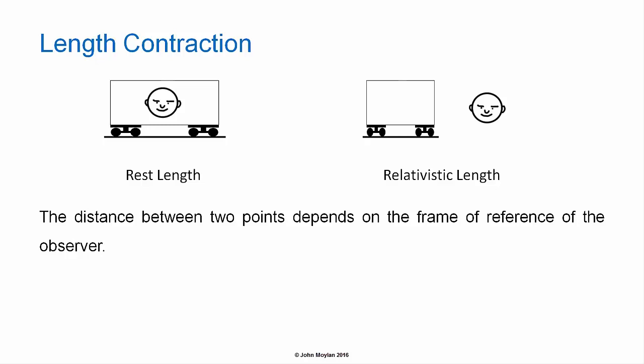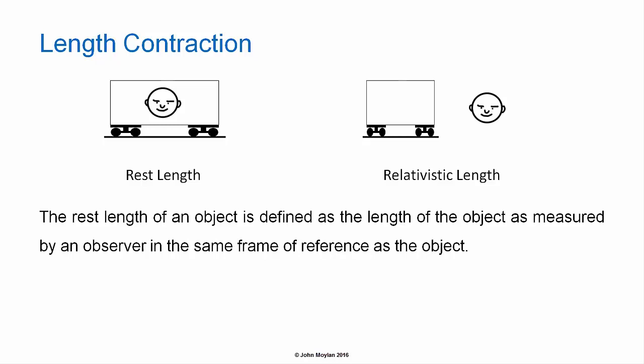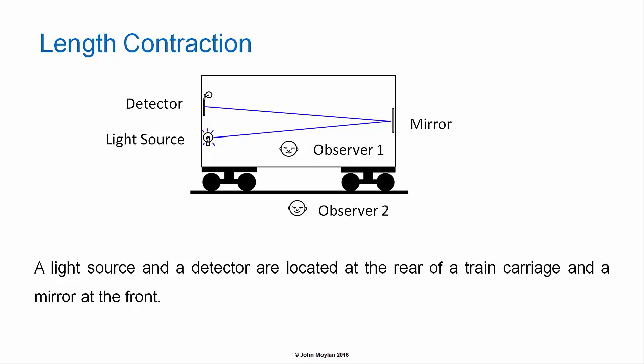The distance between two points depends on the frame of reference of the observer. The rest length of an object is defined as the length of the object as measured by an observer in the same frame of reference as the object. To explain this, imagine the following thought experiment.